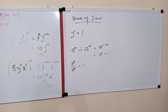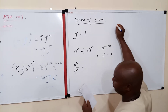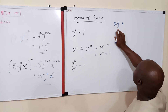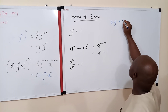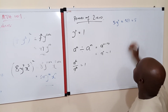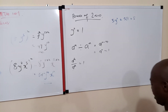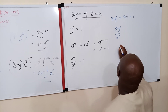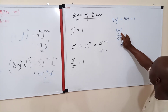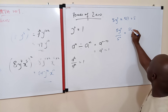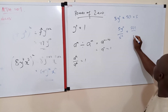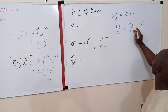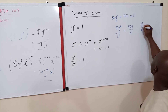Let's consider some examples. If we have 5y raised to power zero and are asked to simplify, anything raised to power zero is one, so y⁰ = 1, and this becomes 5 × 1 = 5. Now if we have 5⁰ over 5², the numerator 5⁰ = 1, and the denominator 5² = 25. So the result is 1/25.